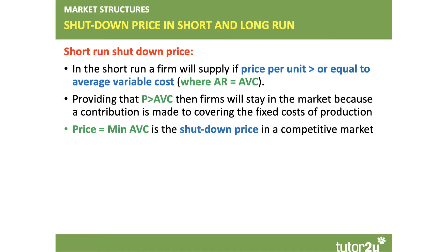In the short run, a firm will continue to supply, in theory, providing the price per unit is greater than or equal to their average variable cost — in other words, the variable cost divided by output, the variable cost per unit. So providing the price is at least equal to the average variable cost, a firm will tend to stay in the market, even if it's making a loss, because it's making at least some contribution to covering the fixed cost of production.